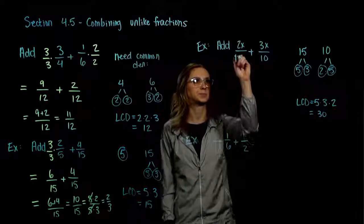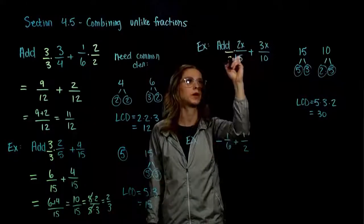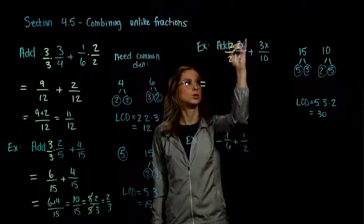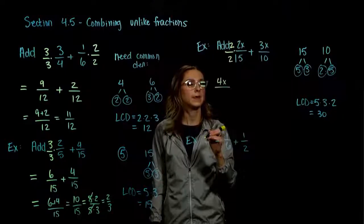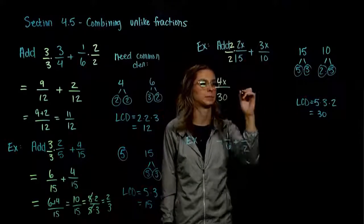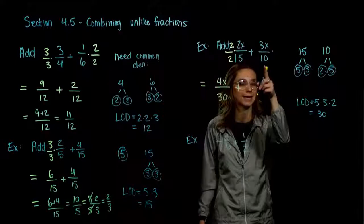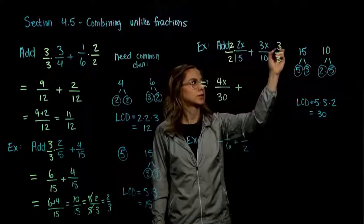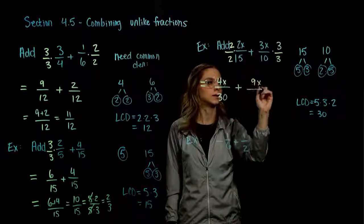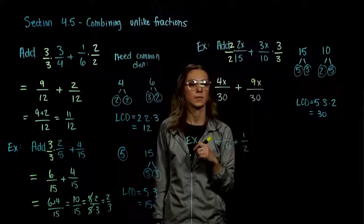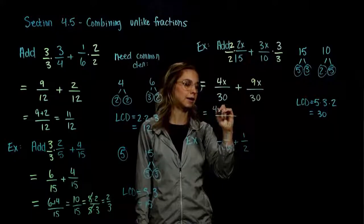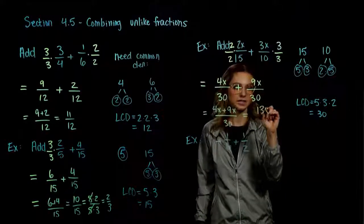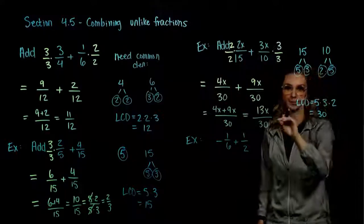Let's build to that common denominator. To turn 15 into 30, we multiply by 2. Whatever we do to the bottom, we have to do to the top. So our equivalent fraction: 2 times 2x gives us 4x up top, and 2 times 15 is 30. For the second fraction, to turn 10 into 30 we multiply by 3. So across the top, 3 times 3x gives us 9x, and 10 times 3 is 30. Now we have the common denominator, so we add across the top: 9x and 4x gives us 13x all over 30. 13 is prime so we can't simplify, and we're done.